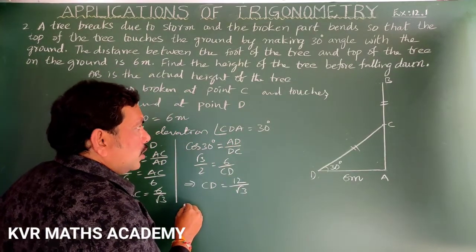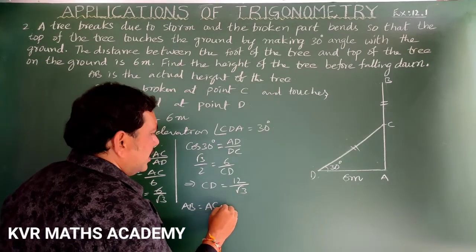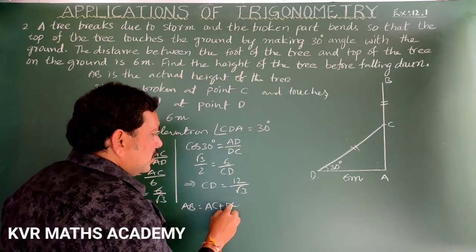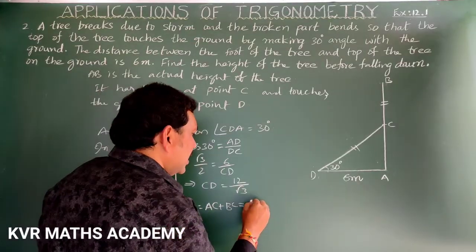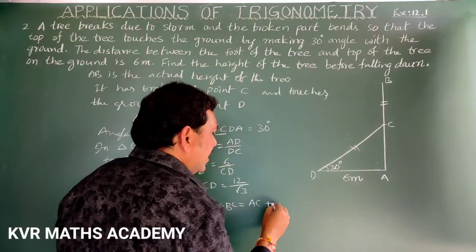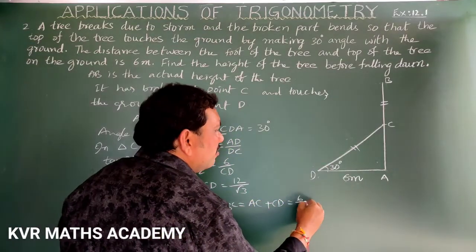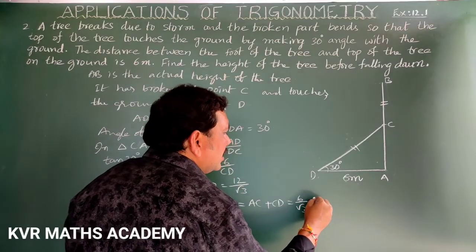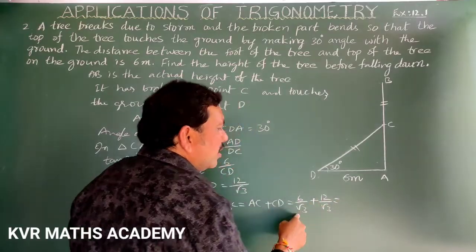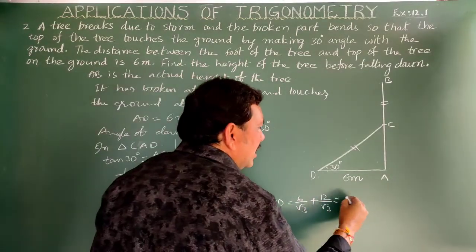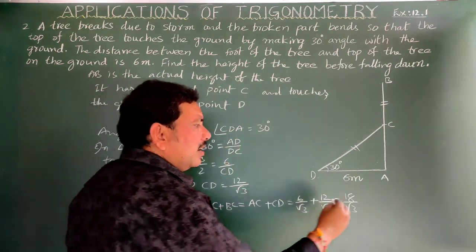AB = AC + BC. Since BC = CD, AB = AC + CD = 6/√3 + 12/√3 = 18/√3. Rationalizing the denominator: 18/√3 × √3/√3 = 18√3/3 = 6√3 meters.